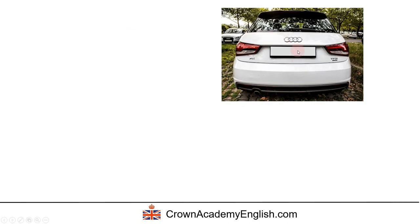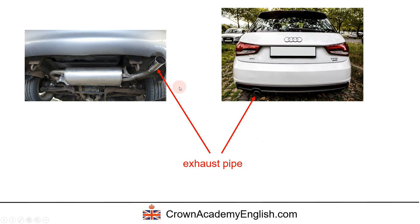Let's have another look at this same car — there's something else. We call this an exhaust pipe. Here is a close-up view of it. Exhaust comes out of the exhaust pipe. Exhaust is all the smoke and pollution that comes out of a petrol car or a diesel car. Hopefully, with the new electric cars, there won't be very much exhaust.